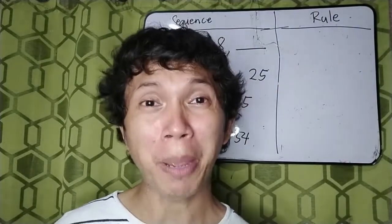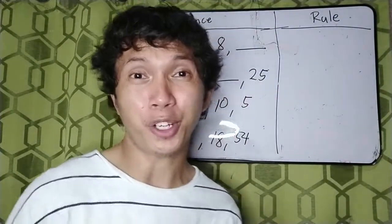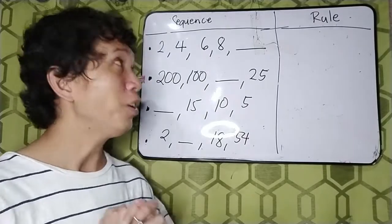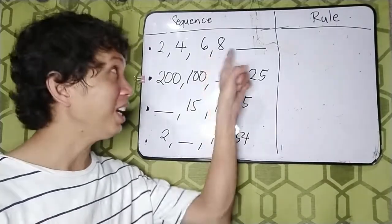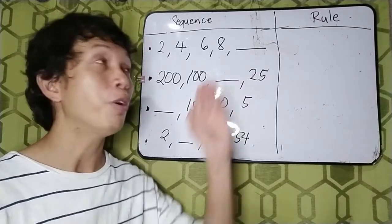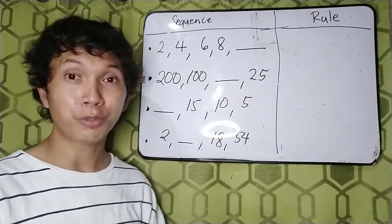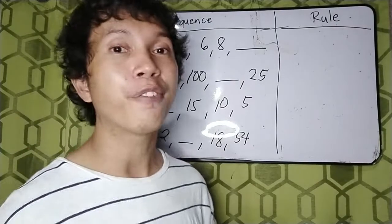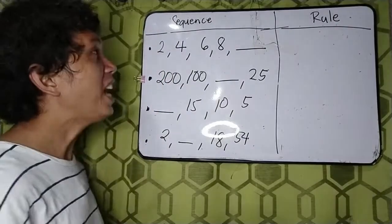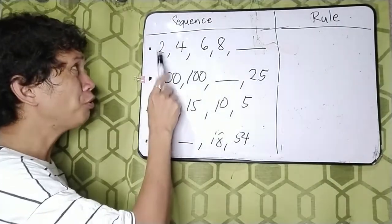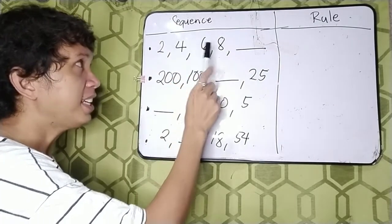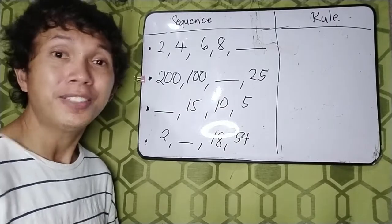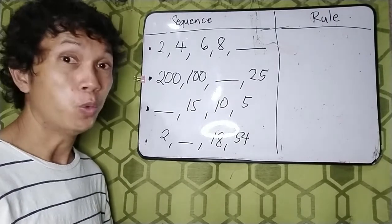Hello, everyone. I have prepared an activity for you as a springboard for our discussion in this video. All you need to do is fill in the missing term and also identify the rule in each sequence. Are you ready? So let's start with our first sequence. We have here 2, 4, 6, 8, and blank. What do you think is the missing term?